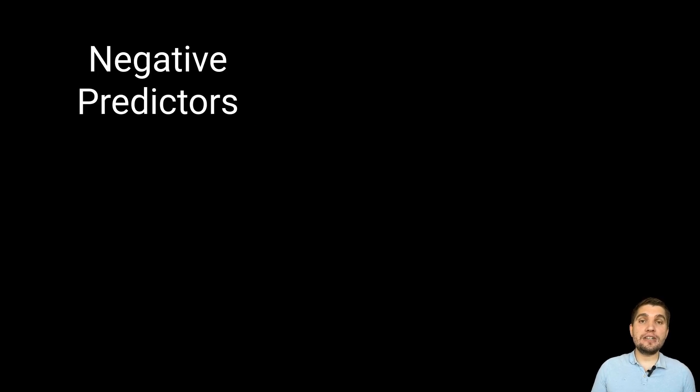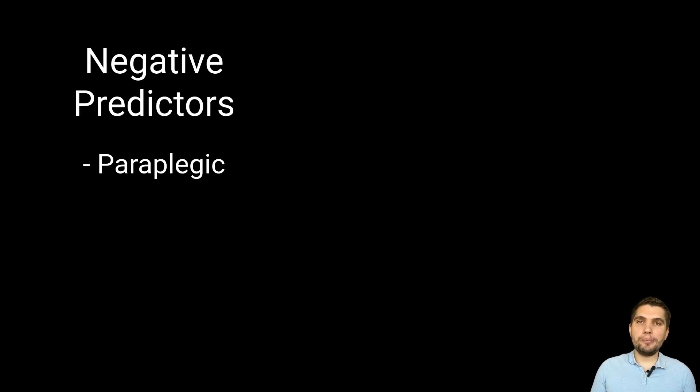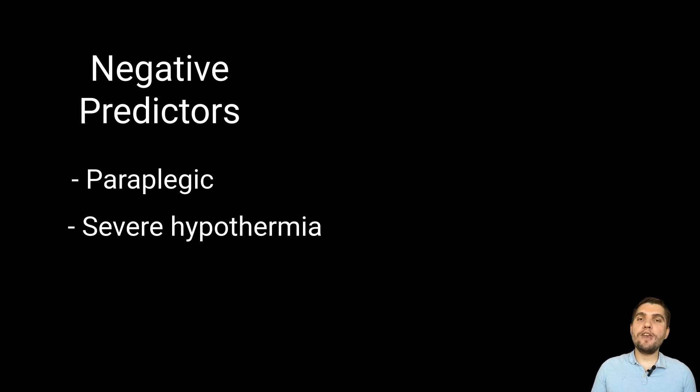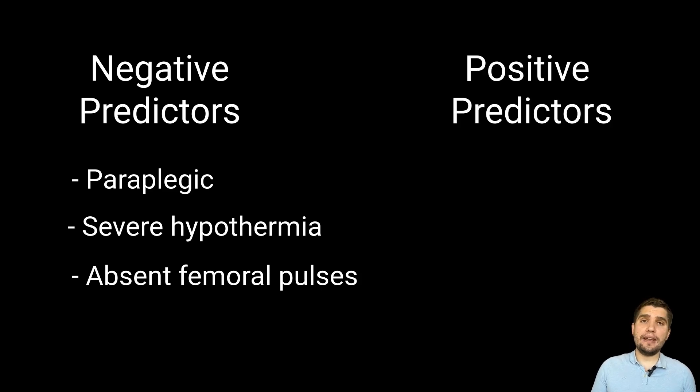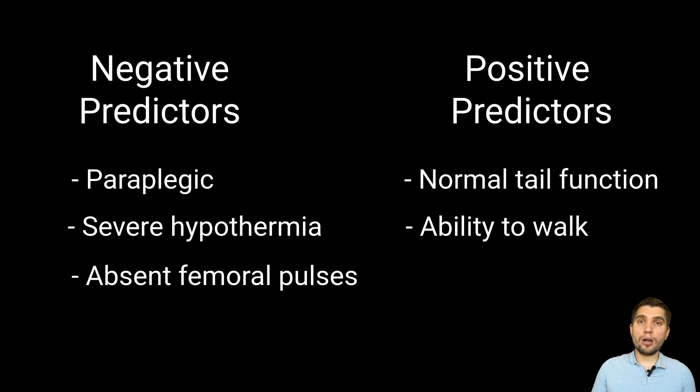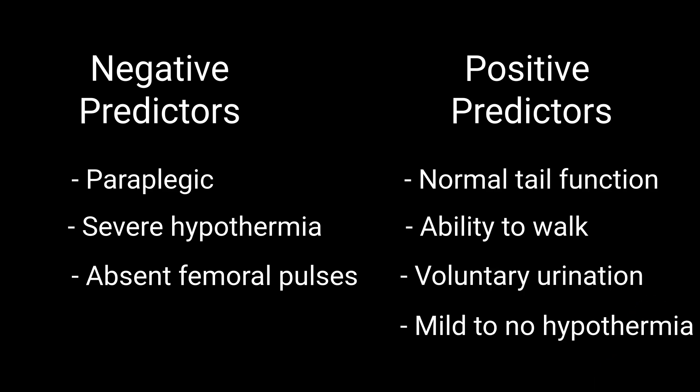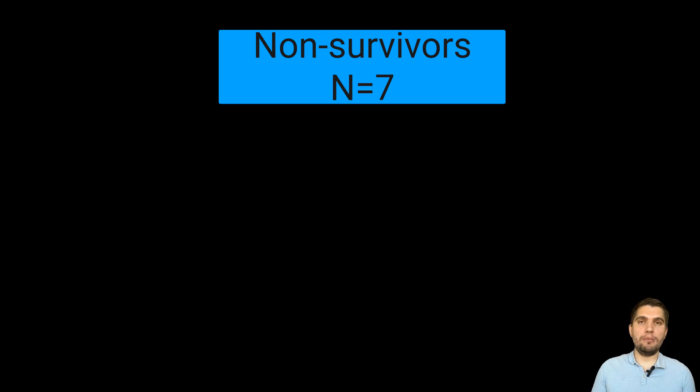Other important predictors of non-survival to discharge included paraplegic status, severe hypothermia, and absent femoral pulses. On the other hand, good prognostic indicators included normal tail function, ability to walk, voluntary urination, and mild or no hypothermia.